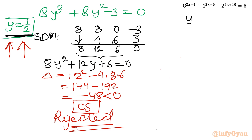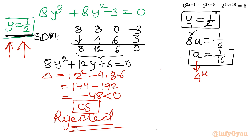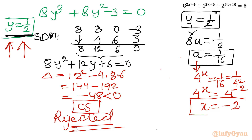Now back-substituting: y = 1/2, and y = 8a, so 8a = 1/2, giving a = 1/16. Our first substitution was 4^x = a, so 4^x = 1/16 = 1/4^2 = 4^(-2). Therefore our final solution is x = -2.